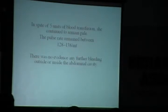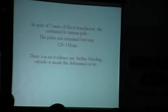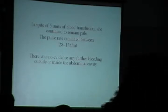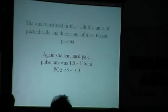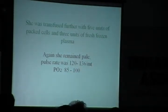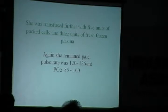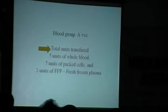After the hysterectomy, all the blood arrived. We gave three units via transfusion, but the patient continued to remain pale with pulse rate 128–138. We thought she might be bleeding again, but there was no internal or external bleeding. We gave five units of packed cells and three units of fresh frozen plasma. She continued to remain pale, but she was conscious and alert. Urine output was okay. Oxygen saturation was 85–100% on supplemental oxygen. Heart rate remained around 130–140.